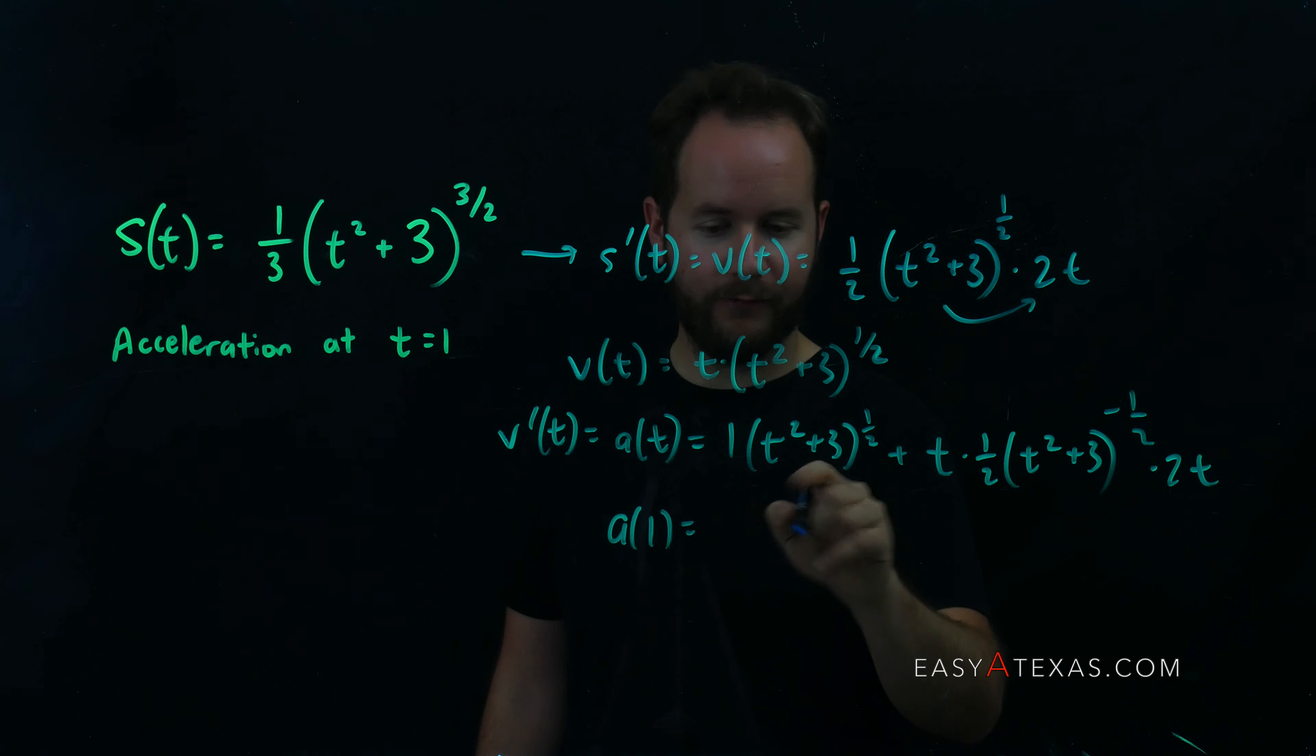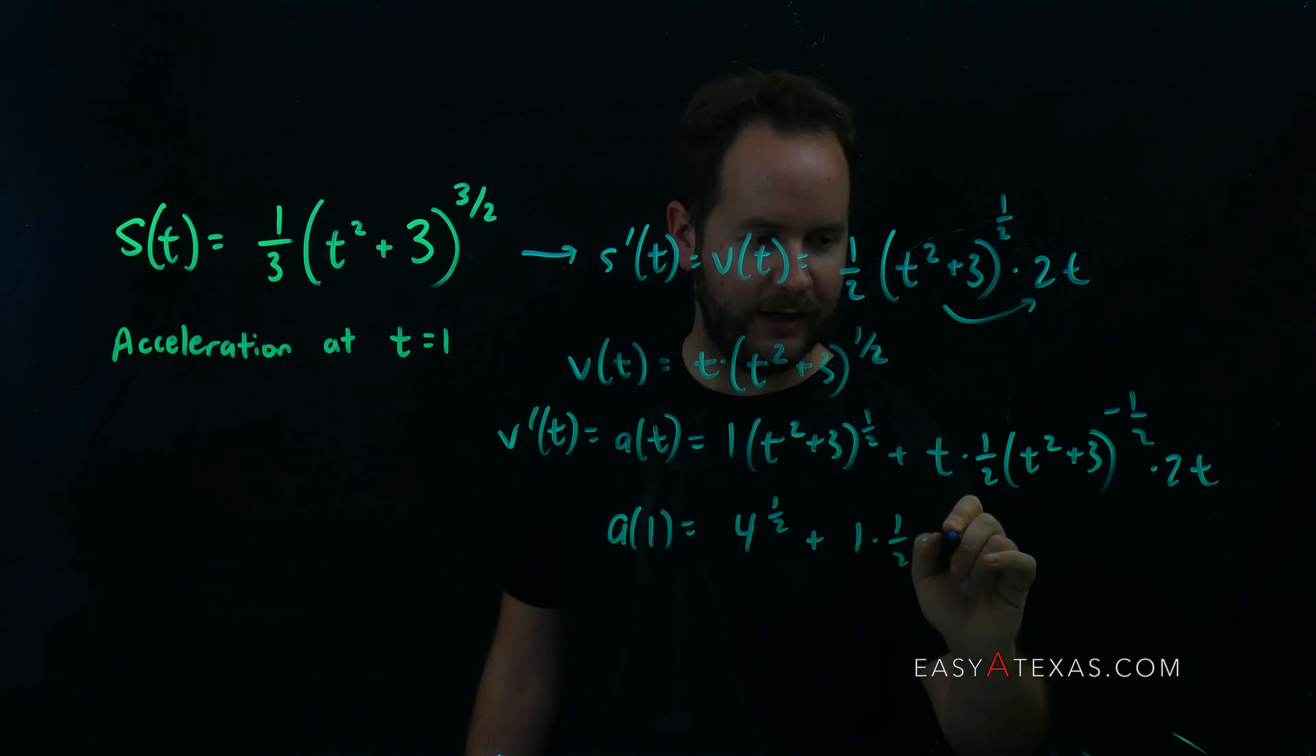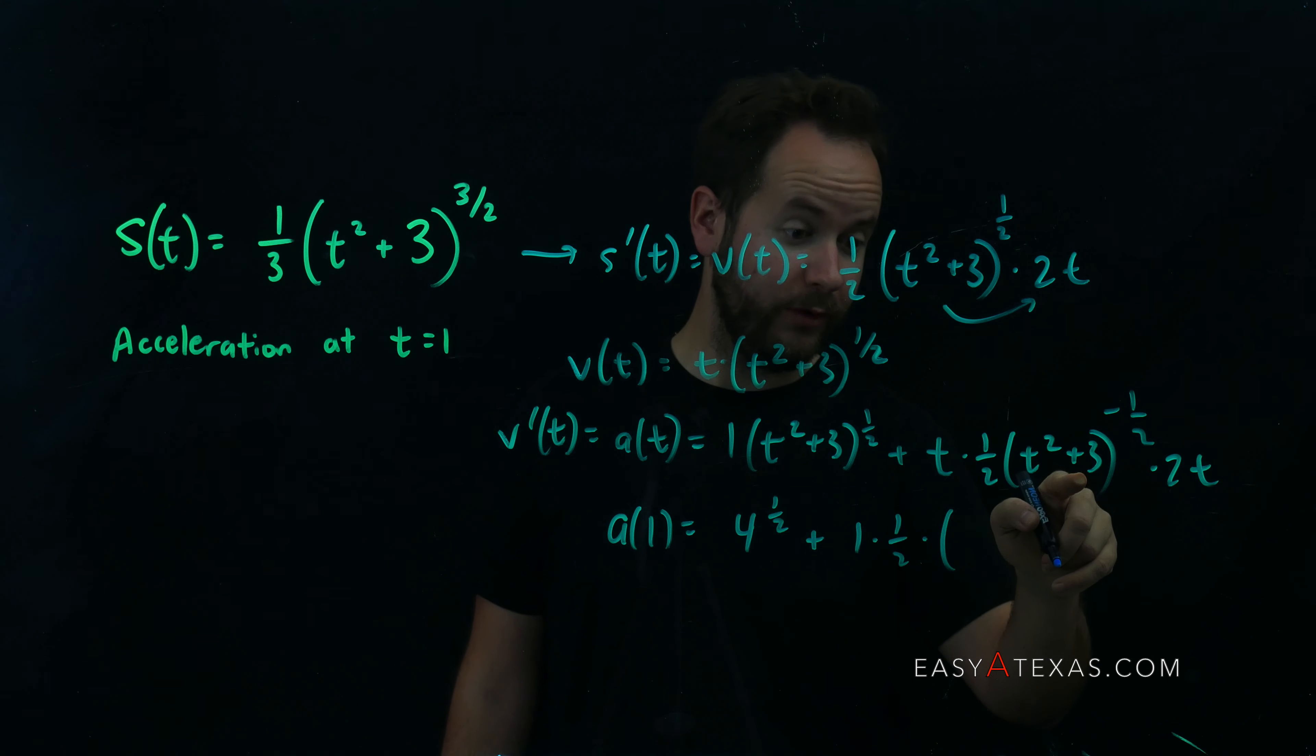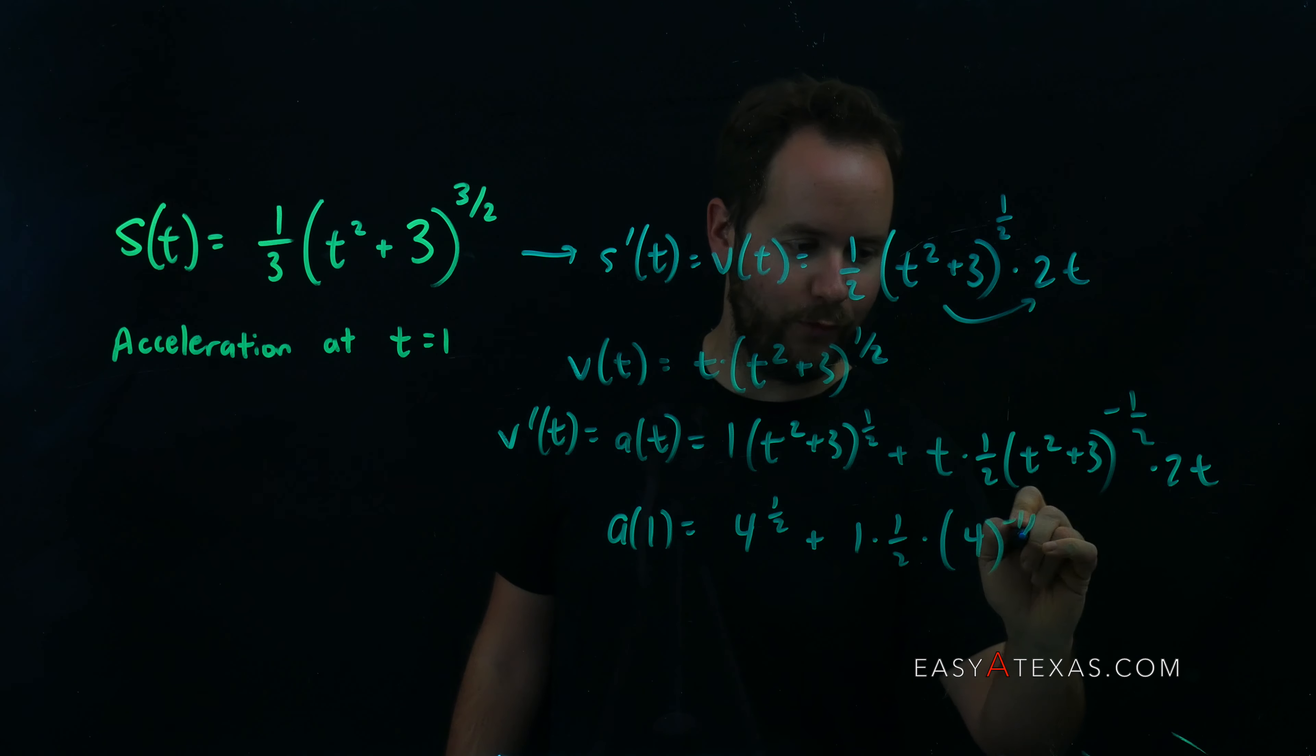So a of one equals, one squared is one plus three is four, so we have four to the one half, plus one times one half times, one squared is one plus three is four, four to the negative one half, times two times one, so times two.